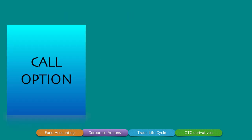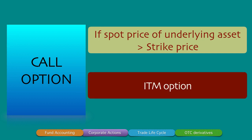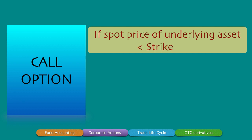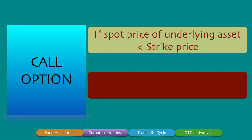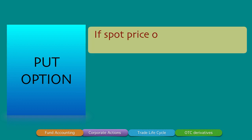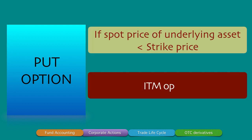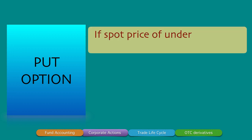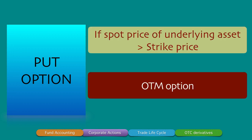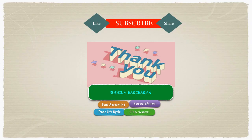To summarize: for a call option, if spot price is greater than strike price, it's in-the-money and you exercise; if spot is less than strike, it's OTM and you let it lapse. For a put option, if spot price is less than strike price, it's in-the-money and you exercise; if spot is greater than strike, it's OTM and you let it lapse. Thank you for watching!